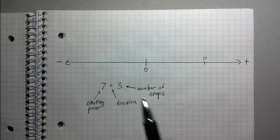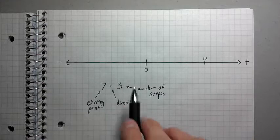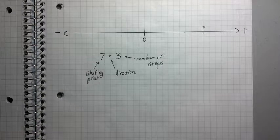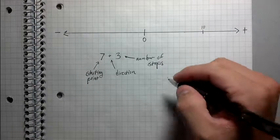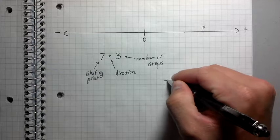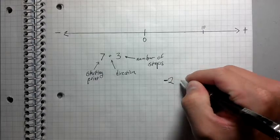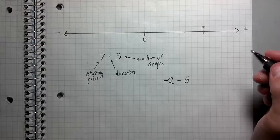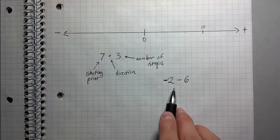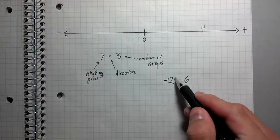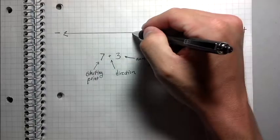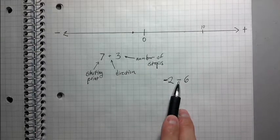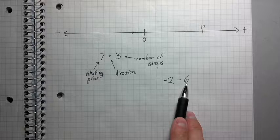But the reason I did this is because what happens now if we do a slightly more confusing example, such as, how about negative 2 minus 6? All right. What do we do here? So let's use this formula. The starting point is negative 2. So we put the dot on negative 2. We put our pin here. The direction is negative. It's left. And the number of steps is 6.